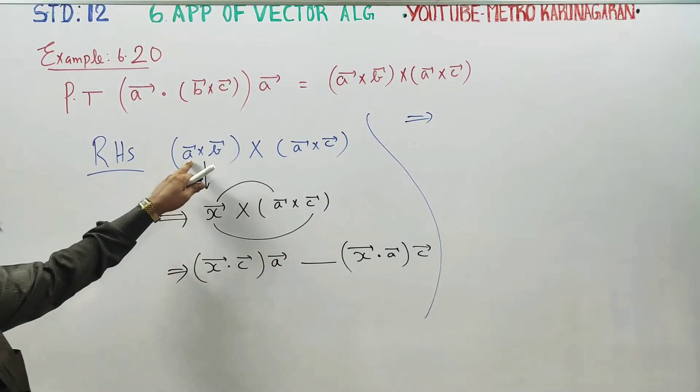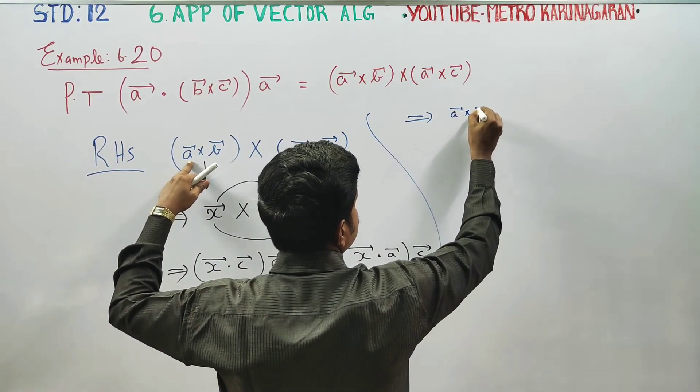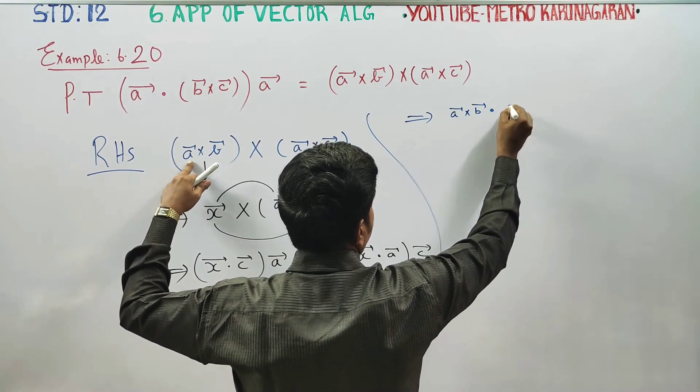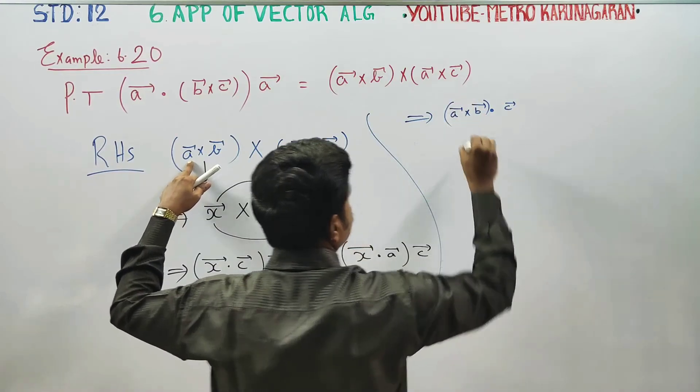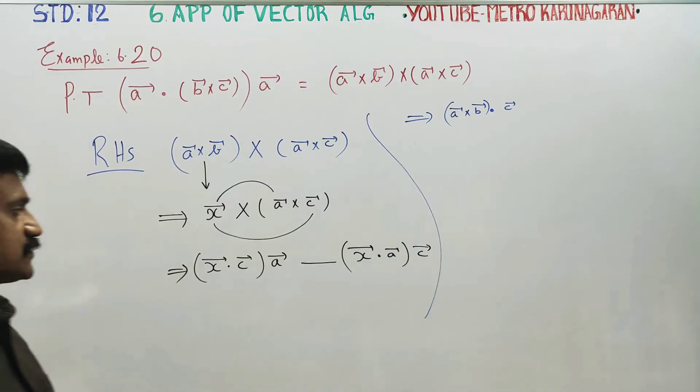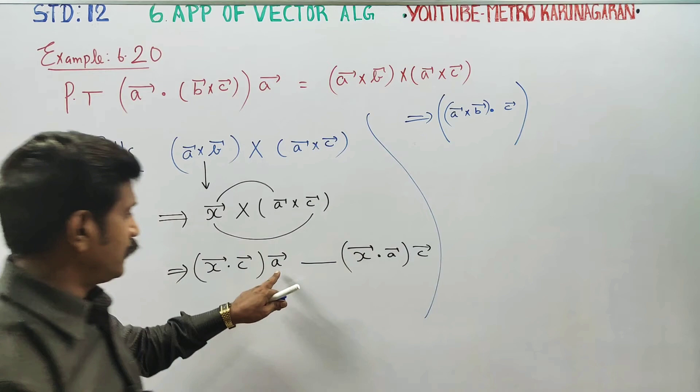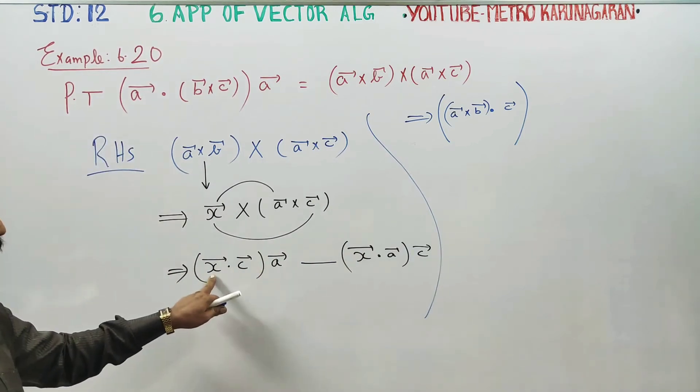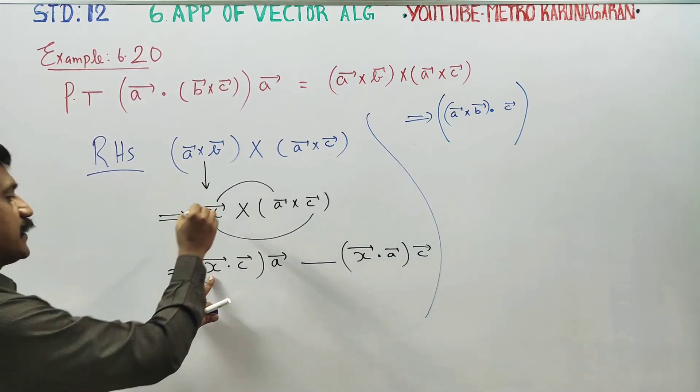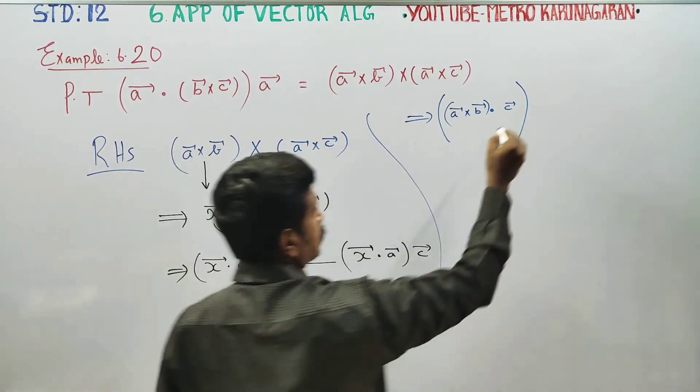A cross B dot C, am I right? X is equal to A cross B dot C into A vector. A cross B dot C minus...